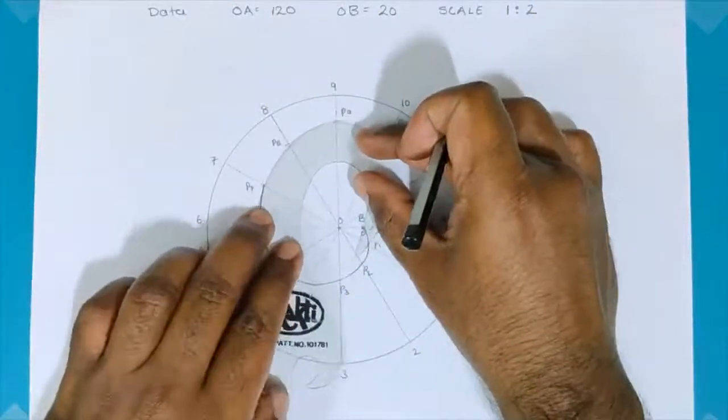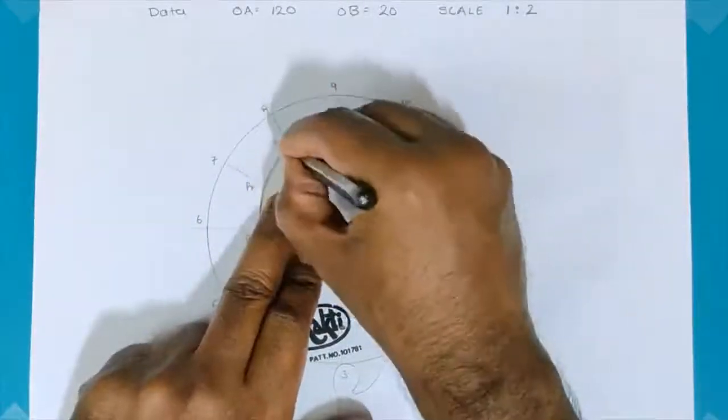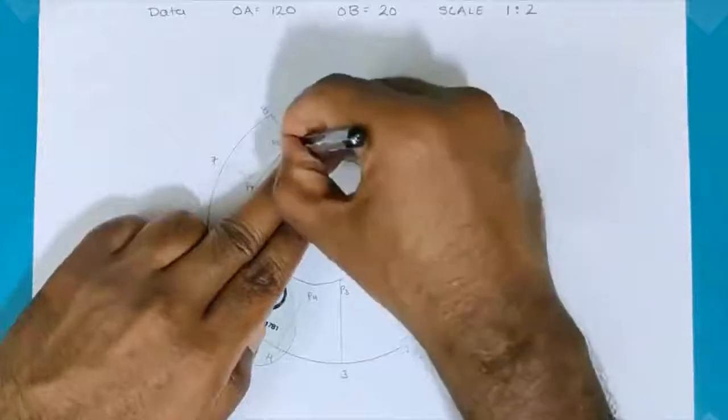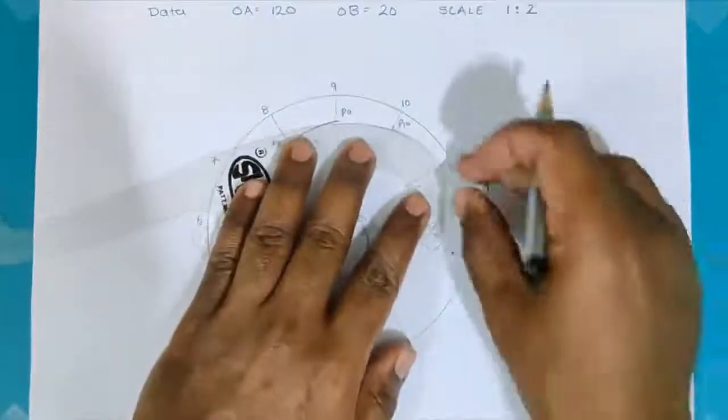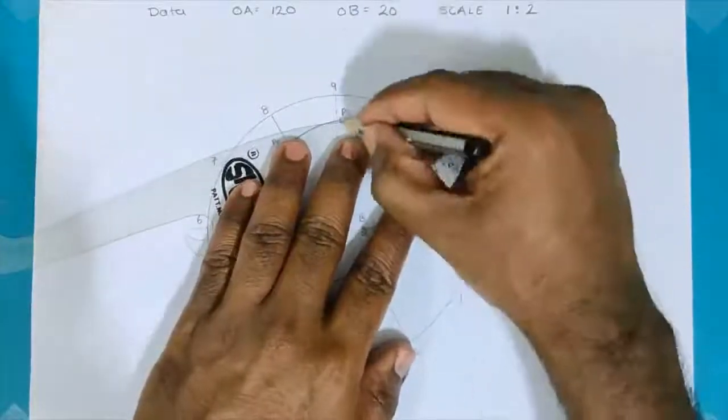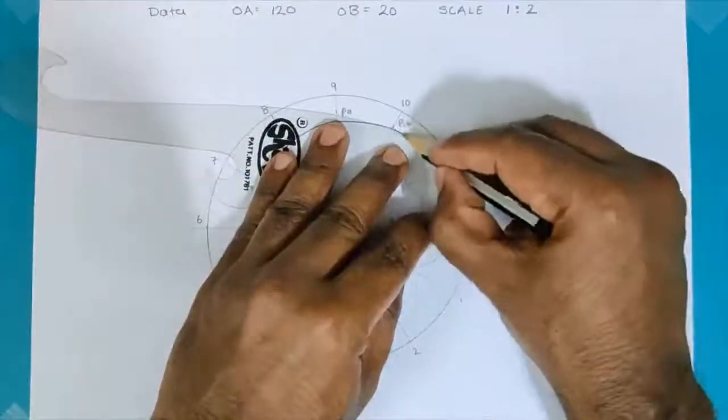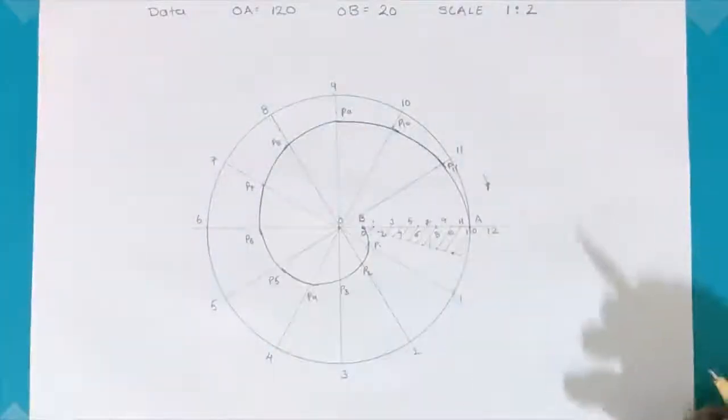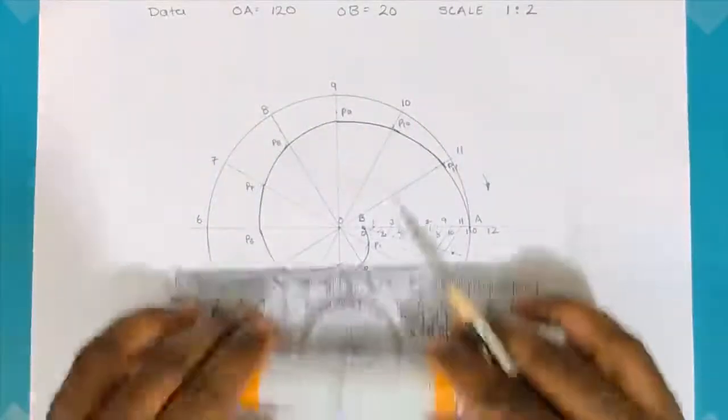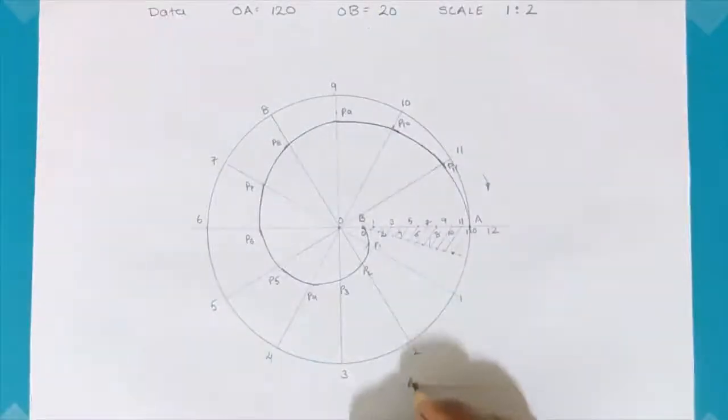This would be the final curve that I would be getting by joining all the points. Remember, the 12th point is point A itself, which is the final point. And this is the final curve. So, I hope you understood the problem. And don't forget to write the name of the curve: Archimedean spiral.